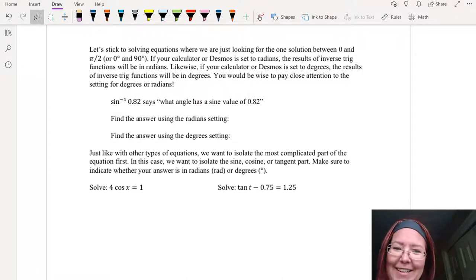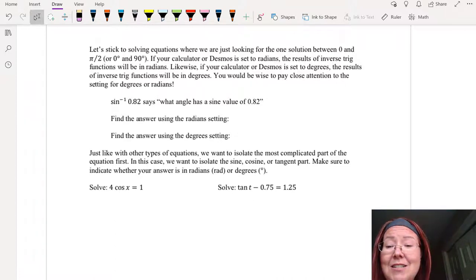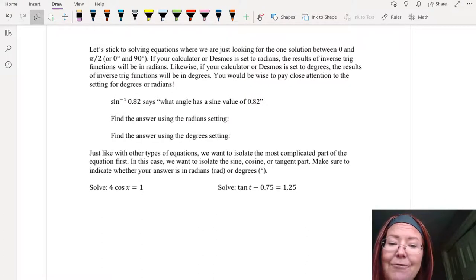Again a warning: if your calculator or Desmos is set to radians, the result of an inverse trig function will be an answer in radians. If your calculator or Desmos is set to degrees, the results of an inverse trig function will be in degrees. You have to pay attention.